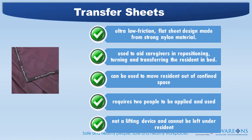If the resident is not a good candidate for the slider sheet system, then transfer sheets might be an option. Features include ultra-low friction flat sheet design made from strong nylon material. They are used to aid caregivers in repositioning, turning, and transferring the resident in bed, and can be used to move the resident out of confined spaces, such as when they have fallen in the bathroom. Use the transfer sheet to move them into an area where a portable lift and sling can be used. They require two people to be applied and used, and are not a lifting device and cannot be left under the resident.